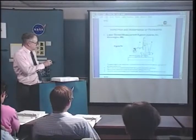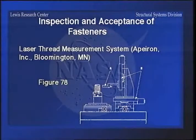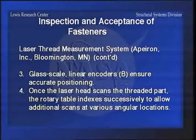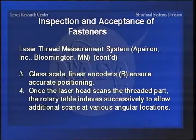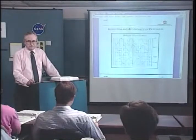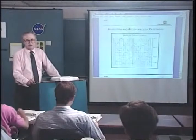In figure 78 is a picture of this machine. You set the fastener down on the head, you can turn it and scan the thread in, because this is on a rotary spindle. Once you scan it, the table will index to another location. Then you get a thread profile that you can compare to a perfect thread. If you're really doing something critical this will work. I believe Marshall got one of these machines because they wanted to use it for checking some of the super critical flight hardware for the shuttle.